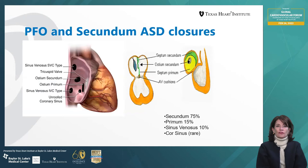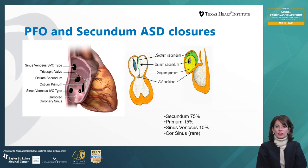For interatrial septal defects, a simple review reminds us that the most common type is really the PFO, which can be based on embryology and may be acquired due to atrial enlargement or due to interventional procedures. In the embryological type, the secundum is the most common. You can see pictures revealing the venosus type, the secundum type, the primum type, and an unroofed coronary sinus, which is very rare.